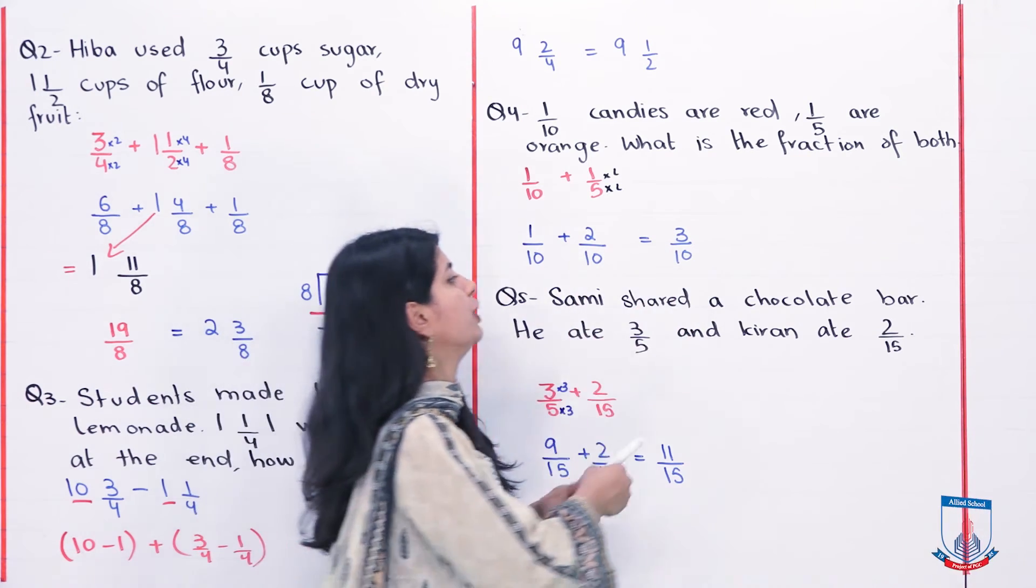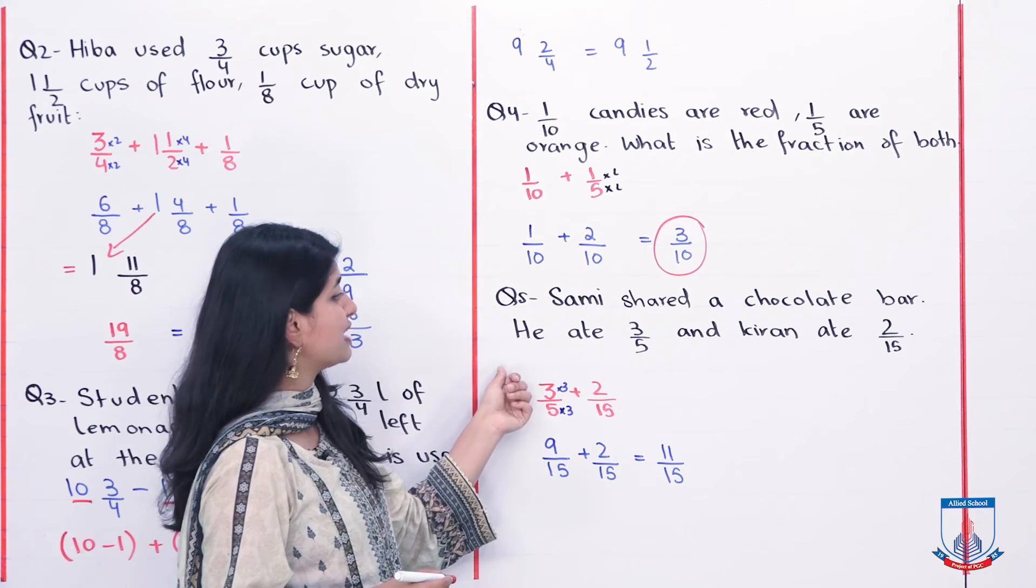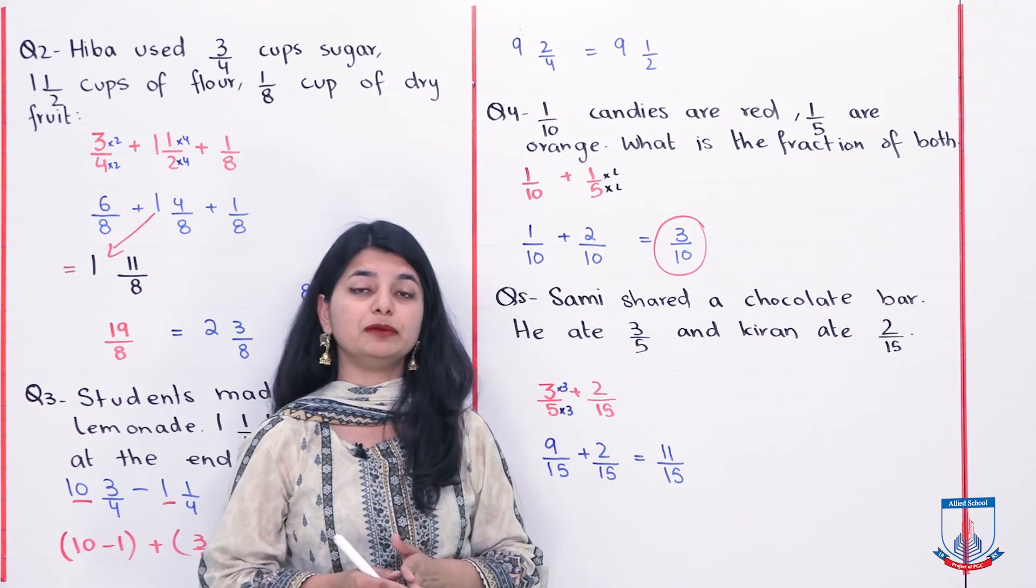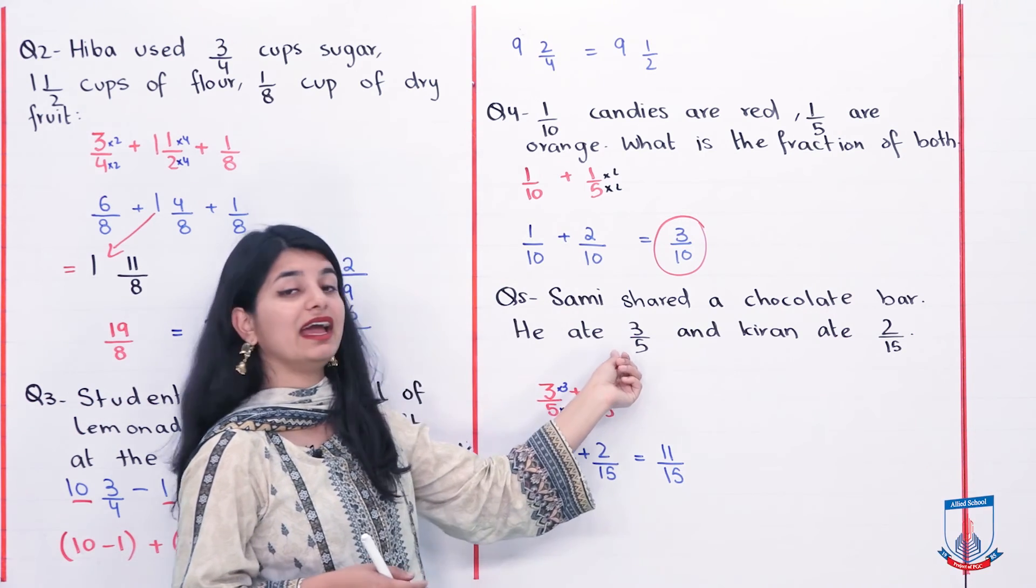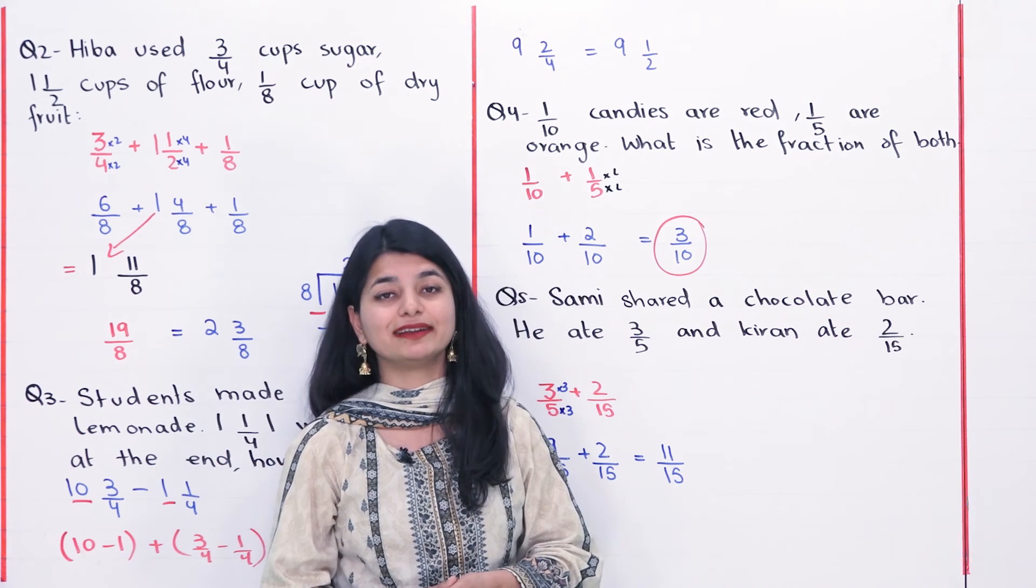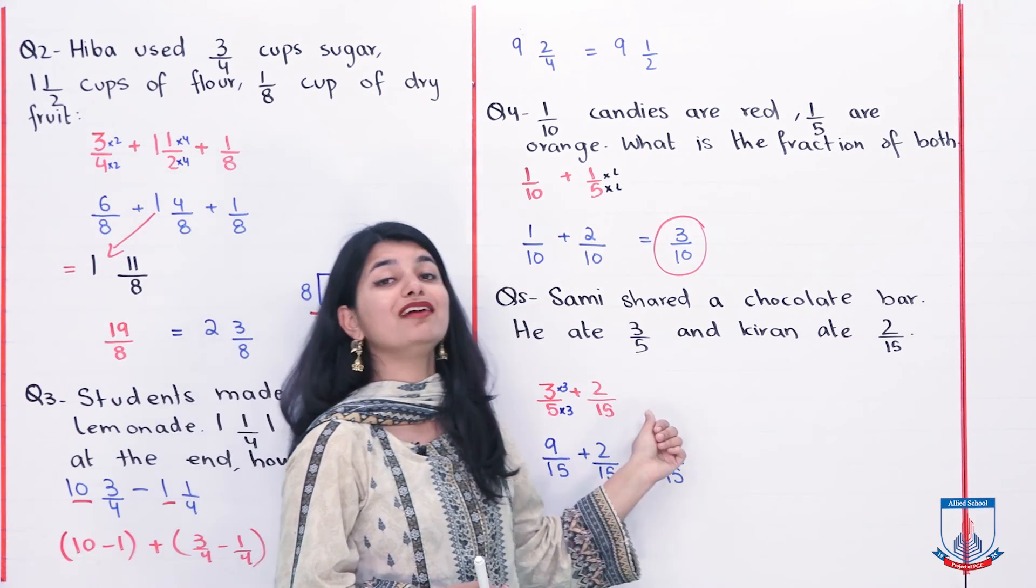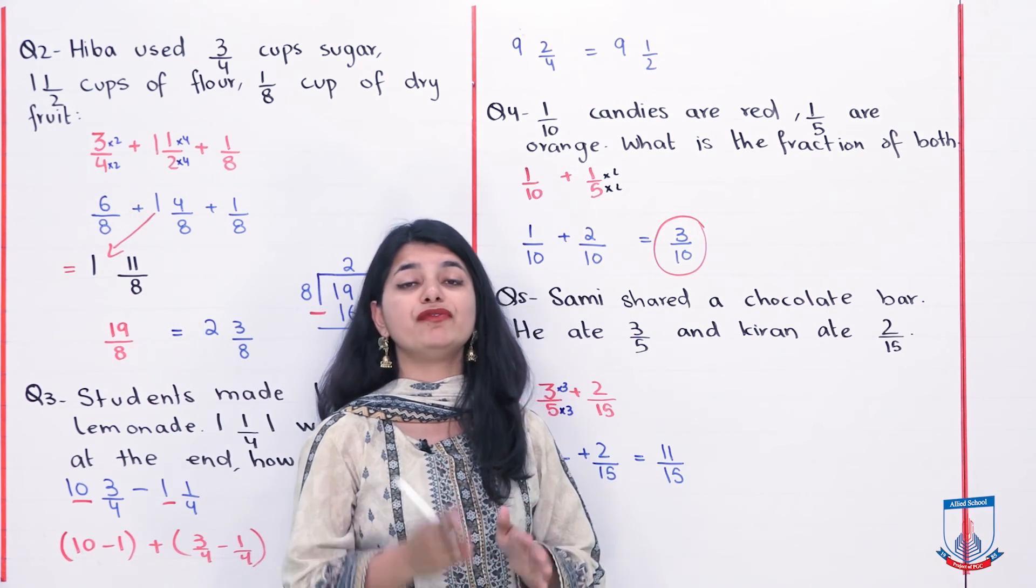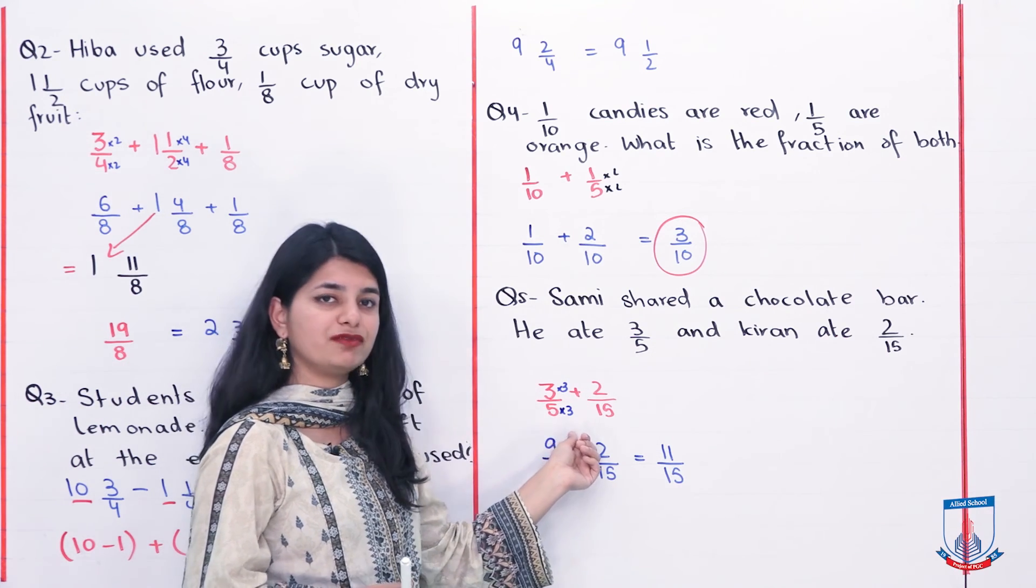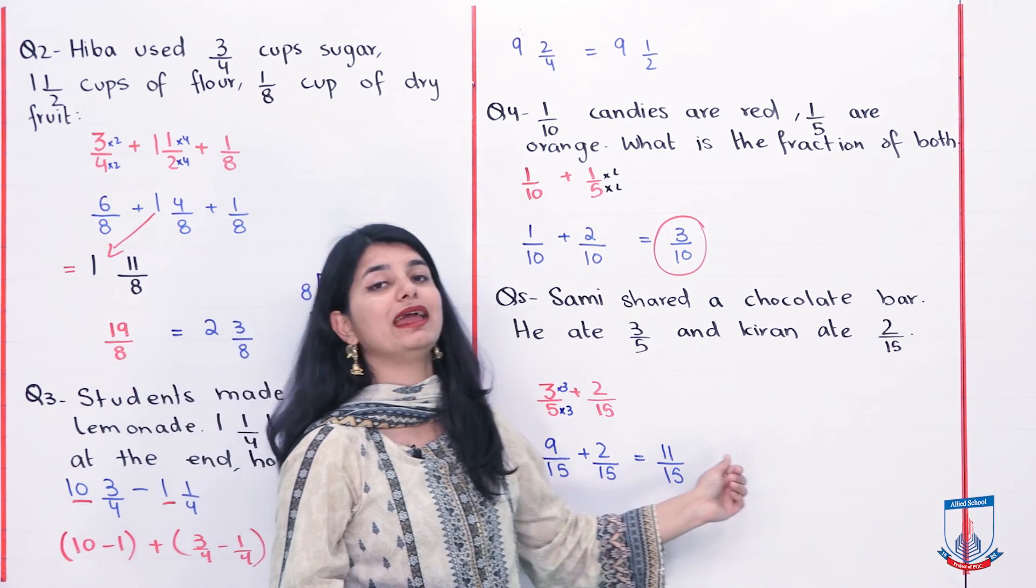Last question. Samhi shared a chocolate bar. He ate 3 by 5 of it and Kiran ate 2 by 15 of it. Samhi had a chocolate bar that he and Kiran shared. He ate 3 by 5 or Kiran ate 2 by 15 portion of that chocolate bar. Tell me how much portion of the chocolate was eaten in total. Again total, so we are going to add. So we will add 3 by 5 plus 2 by 15. 5 and 15 should be the same. An easier way is 5 multiply by 3 is 15. Upper also 3 multiply by 3 is 9. So 9 by 15 plus 2 by 15. 9 plus 2 is 11 and 15 below. 11 by 15.